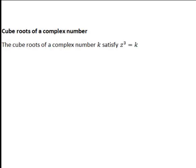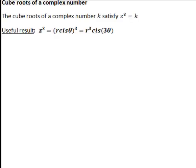Let's have a look at how we find the cube roots of a complex number. If a complex number is k, its cube roots must satisfy z³ = k. The useful result that z³ in polar form is (r cis θ)³ equals r³ cis(3θ) for any complex number. That result will actually help us to find cube roots of a complex number.